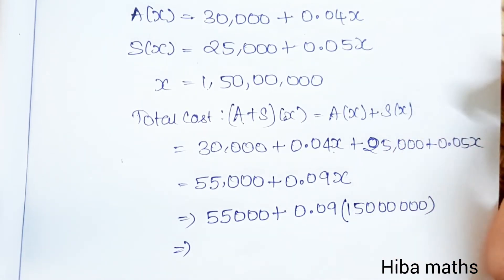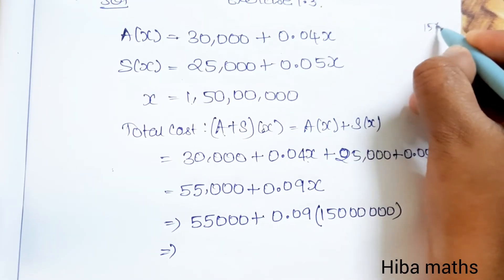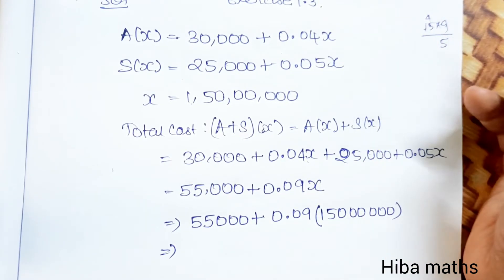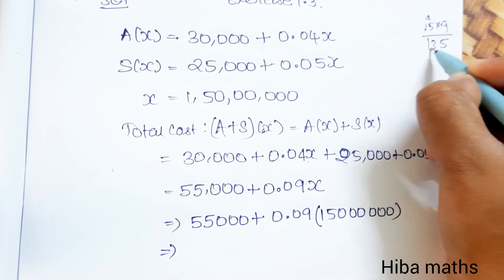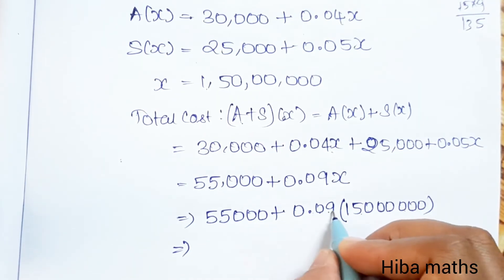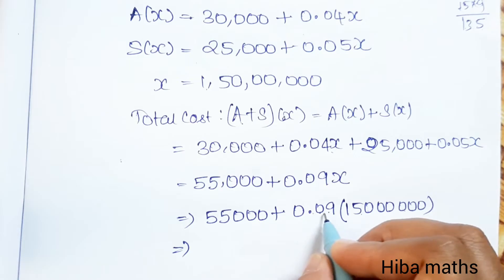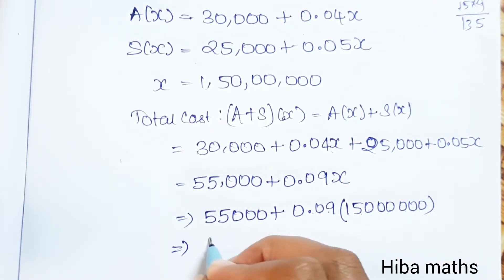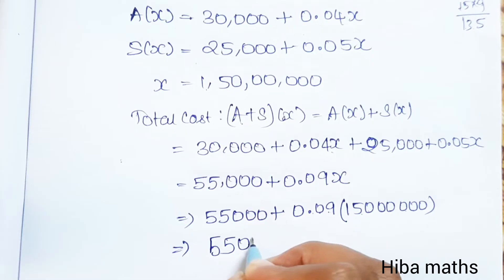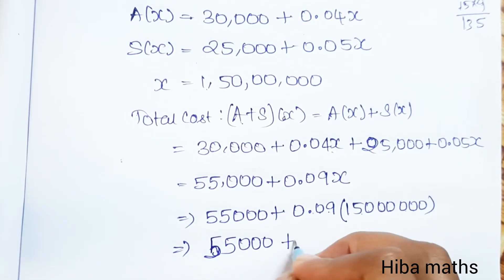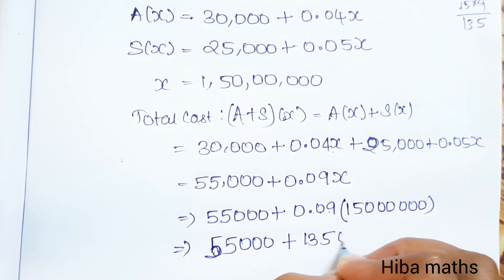Calculating 0.09 multiplied by 1,50,00,000: this gives us 13,50,000. We already have 55,000, so adding these two values together: 55,000 plus 13,50,000 equals 14,05,000.